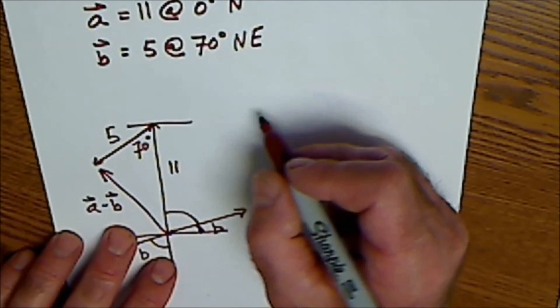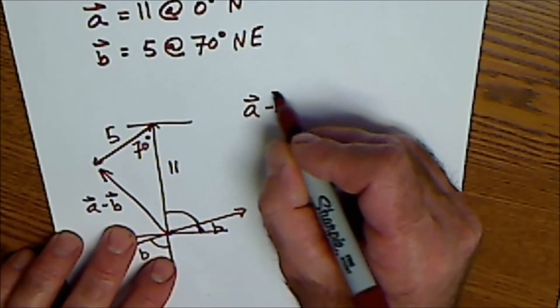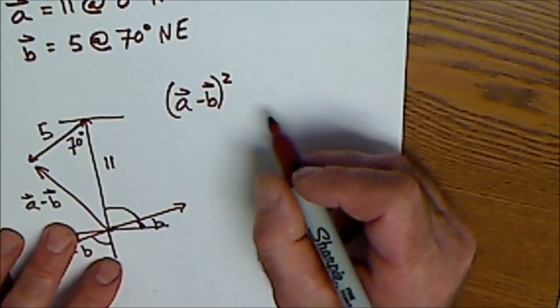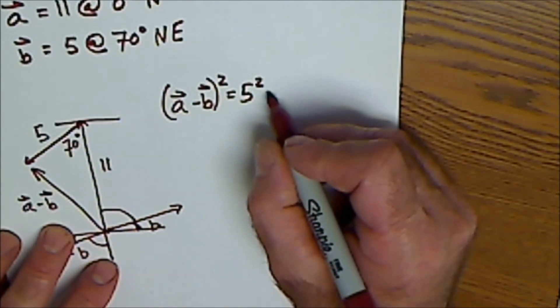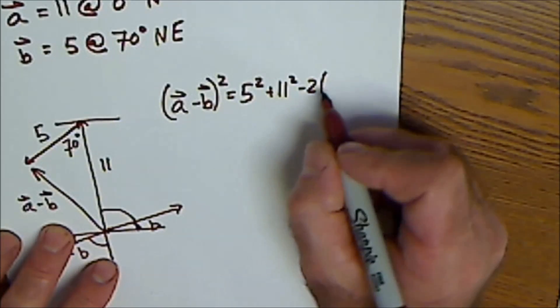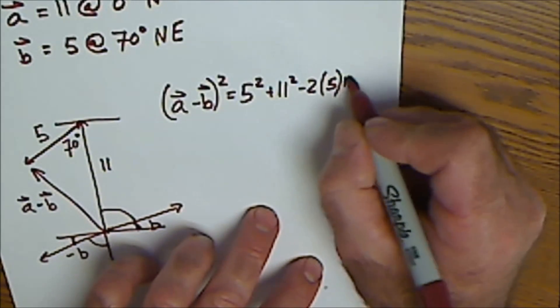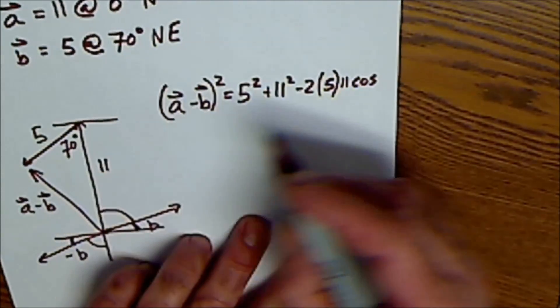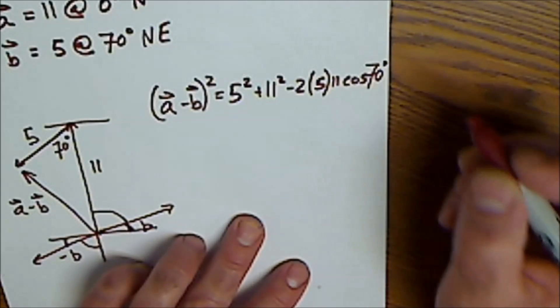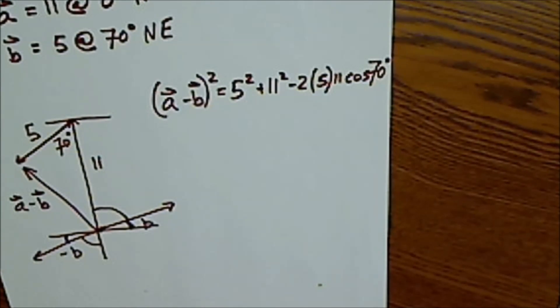And I'm going to say that vector A minus B squared is equal to one leg squared plus the other leg squared minus 2 times one leg times the other, cosine the angle opposite the side, cosine of 70 degrees. Read that on my calculator. So that's a vector here. 108 square root of 108.